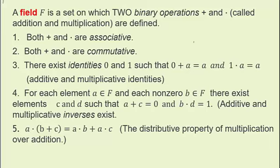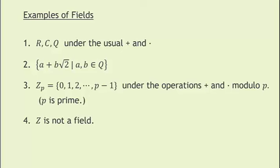So a field is much more structured than a group with one operation, which may or may not be commutative. Some examples of fields are the real numbers, the complex numbers, the rational numbers under our usual addition and multiplication. Under multiplication, we're talking about R*, C*, and Q*. Another example is called a field extension: taking Q and throwing in the square root of two, then taking all possible linear combinations a plus b times the square root of two, giving us a field that contains that irrational number.